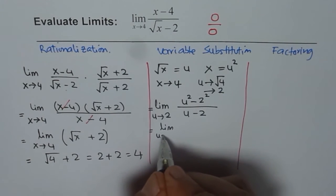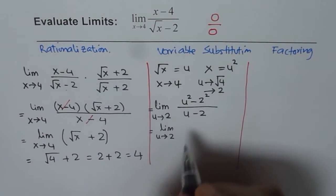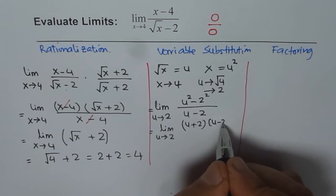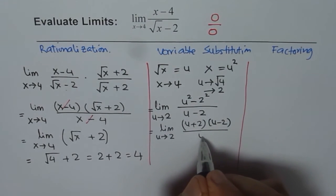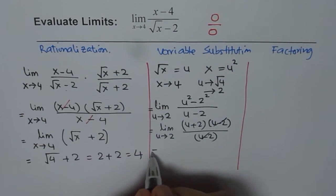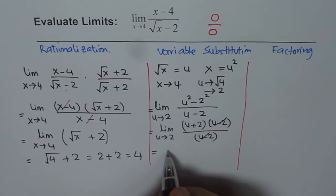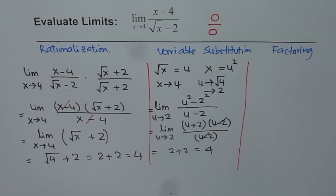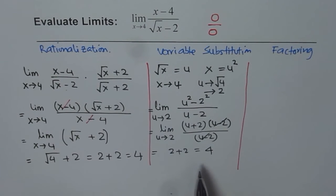So we have limit u approaches 2. And I can write numerator as u plus 2 times u minus 2. Denominator is u minus 2. They cancel out. And now I can substitute 2 and get the answer. So I get 2 plus 2 equal to 4. So we get the same answer by variable substitution, a very effective technique which can be used for most of the indeterminate cases.